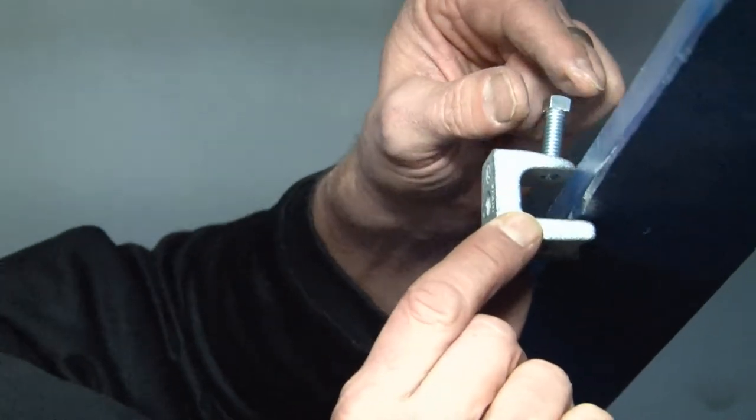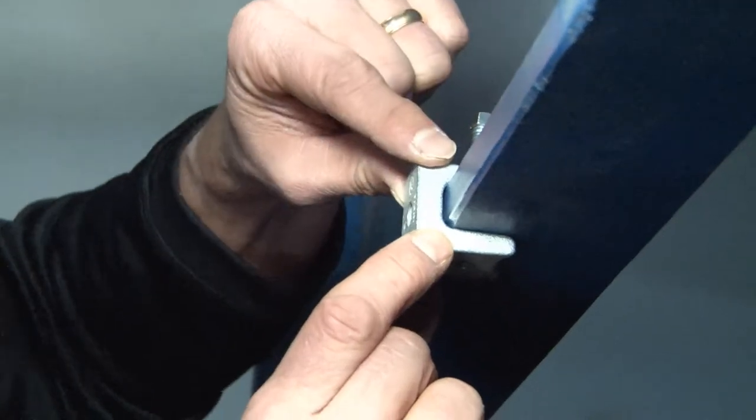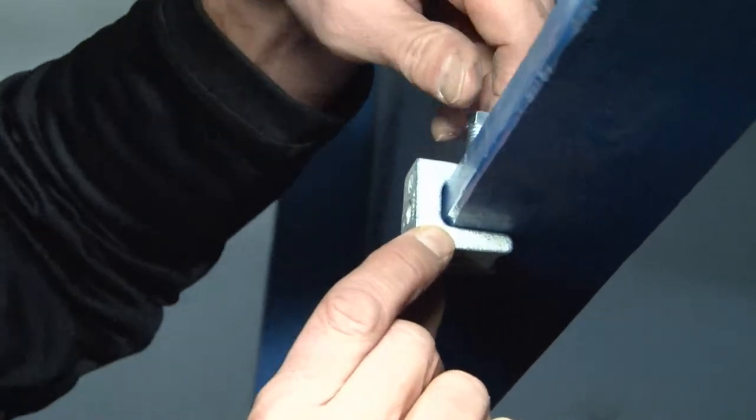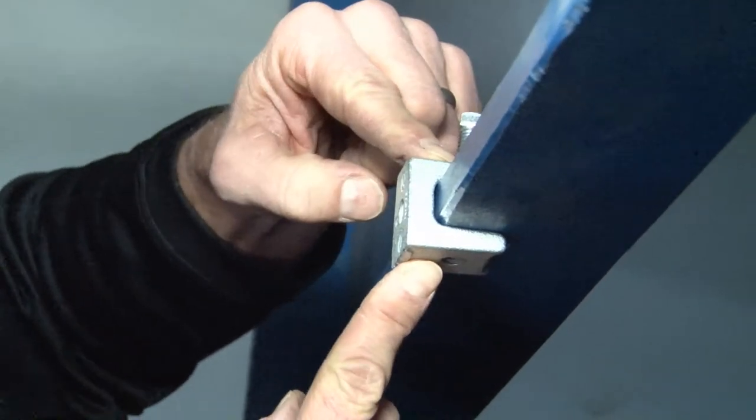The way this product installs is quite simple. We align it with the edge of the beam wherever you would like your fasteners to be dropped. Slide it along the beam, tighten the set screw on the very top, securing the beam clamp to the beam.